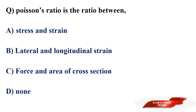Poisson's ratio is the ratio between? Options: stress and strain, lateral and longitudinal strain, force and area of cross section, none of those. Answer: option B, lateral and longitudinal strain. Poisson's ratio is the ratio of lateral strain to longitudinal strain.